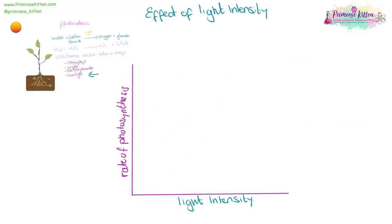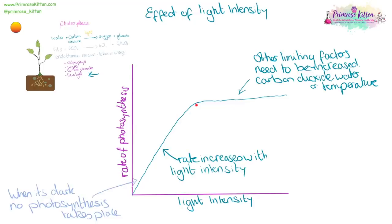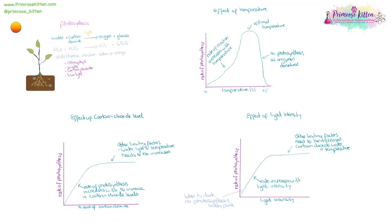Light intensity is important for the rate of photosynthesis. When it's nighttime, when it is dark, we do not have lots of photosynthesis going on. As we get more light intensity through the day, the rate of photosynthesis will increase until we get to a point where light is no longer the limiting factor and other things like the reactants or temperature need to be increased. Even though the graph is flat at that point, it hasn't stopped — there is still a steady rate of photosynthesis. The actual rate of photosynthesis is much more complicated, depending on lots of different things all at once.